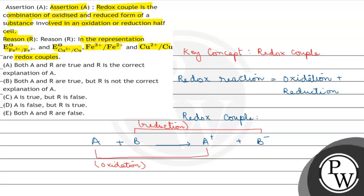So this is a redox reaction. A and A+ is one redox couple, and B and B- is the second redox couple.